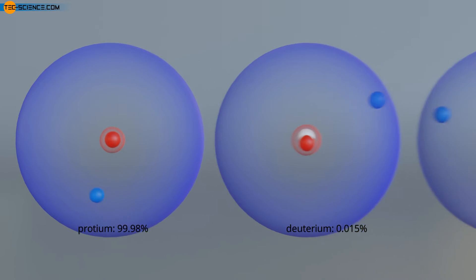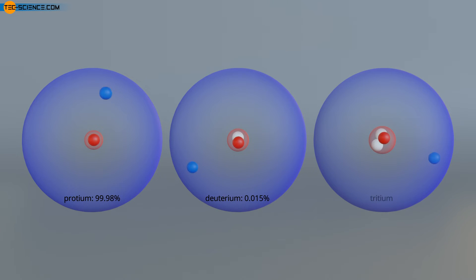Another hydrogen isotope even has two neutrons in its nucleus and is called tritium. This isotope accounts for only a tiny fraction of total hydrogen in nature. Unlike proteum and deuterium, however, tritium is not stable and decays to helium-3 with a half-life of about 12 years.